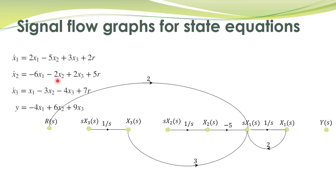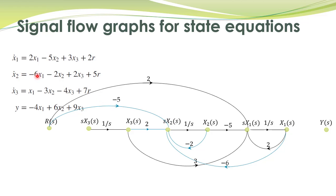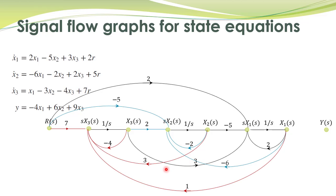Next, we represent the second state equation with the signal flow graph. x2 dot is over here: x2 dot equals minus 6x1 minus 2x2 plus 2x3 plus 5r — note there is a typo, it must be plus 5. We connect the corresponding branches for each term. Similarly, the third equation is represented over here by the same procedure, implementing all three state equations.